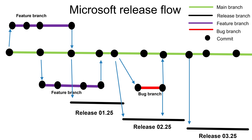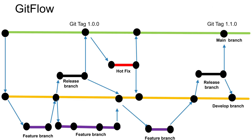The next strategy is Git Flow. Here, along with the main branch, you will create one more long-lived branch called the develop branch. Both the main and develop branches are long-lived branches. Once you create the develop branch, you will create feature branches from the develop branch, develop your features, and merge them back to the develop branch.